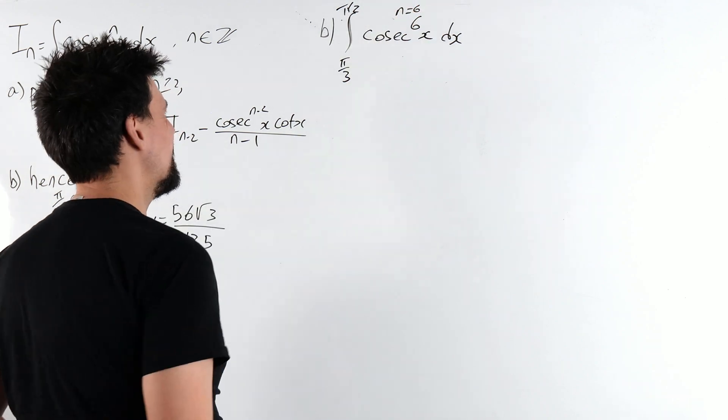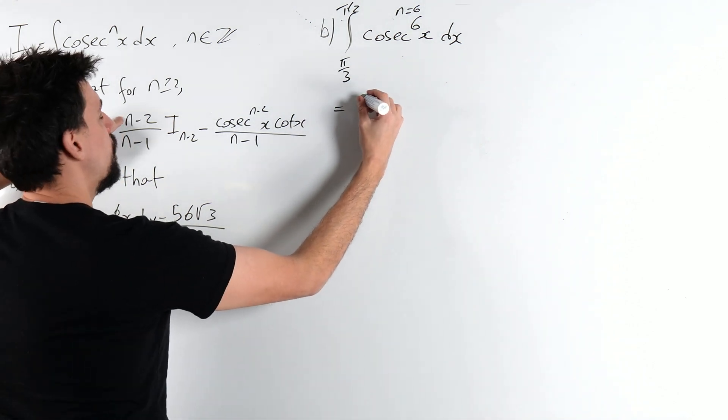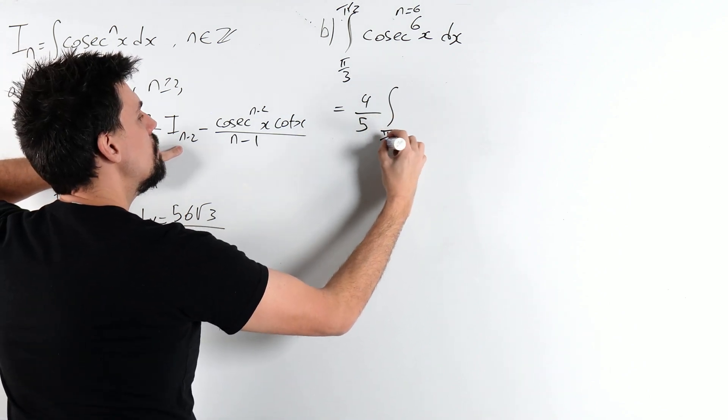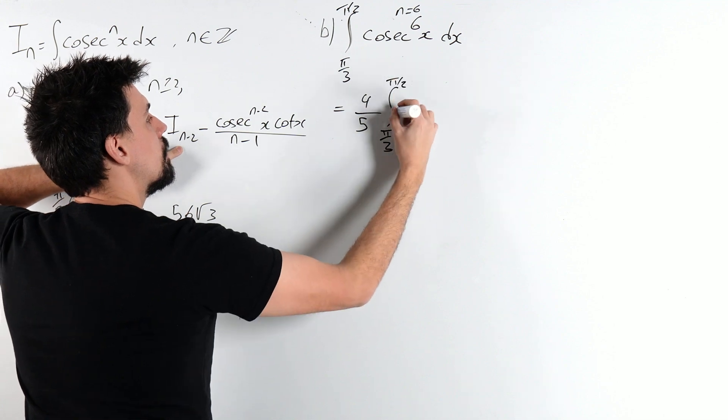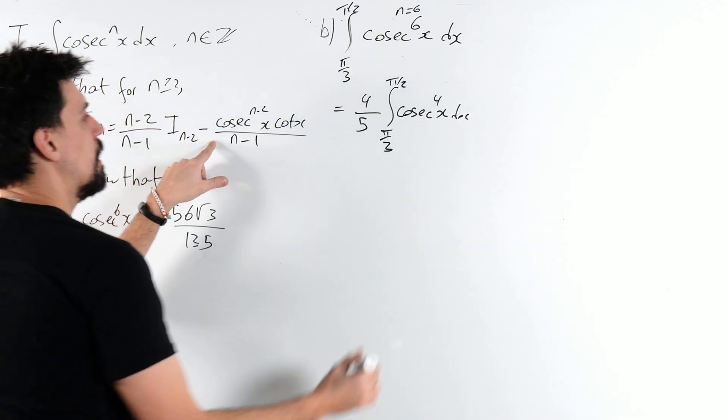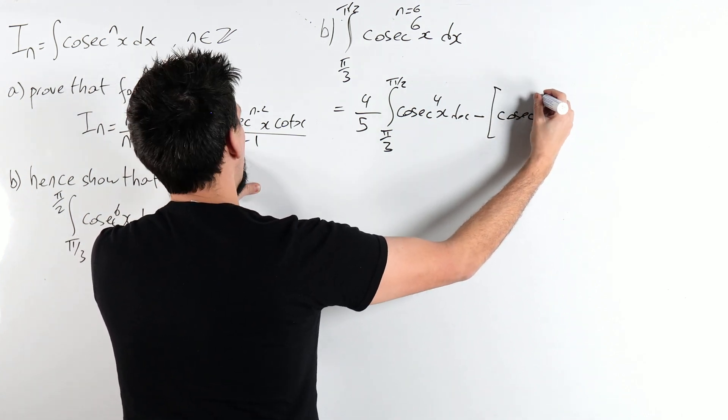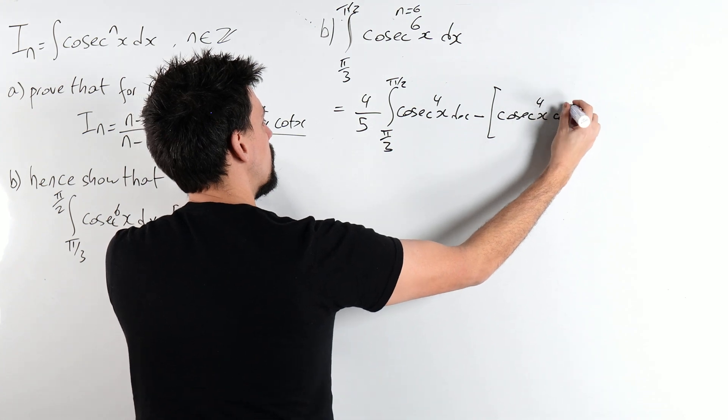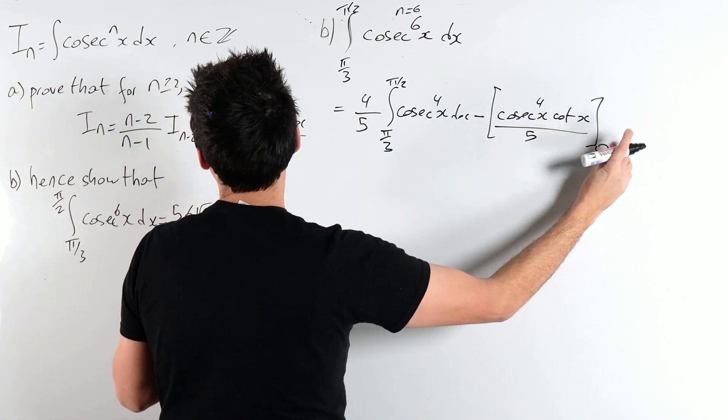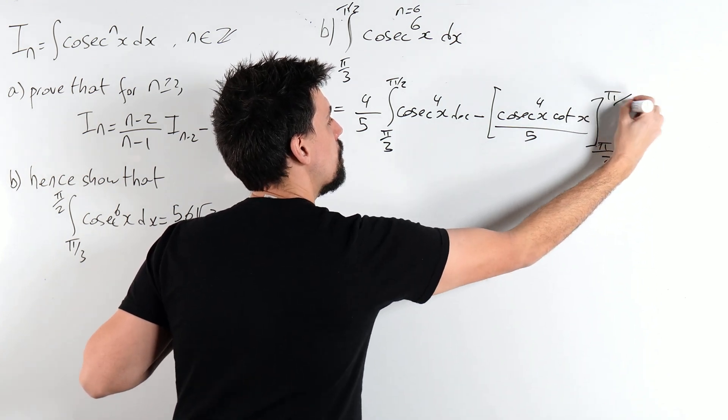Funnily enough, part B just makes absolute use of what we just did. So we're going to use our identity with n is 6. So this is equal to 4/5, 6 minus 2 is 4, 6 minus 1 is 5, i_n-2. Okay, so we've reduced that. Minus. Now we're going to have to plug some numbers in here.